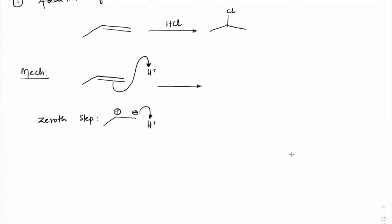As H⁺ attacks the π bond, Cl⁻ is leaving — this is always the slow step. The result is carbocation formation. Then Cl⁻ can re-attack the carbocation — a very fast step. This gives the chloride product. Alternatively, carbocation rearrangement can occur before Cl⁻ attack.